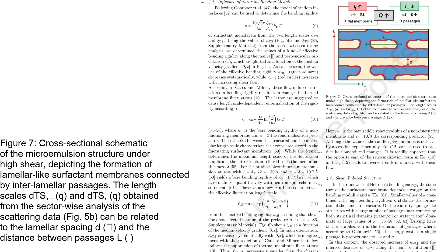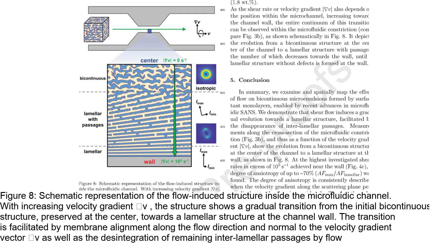A cross-sectional schematic of the microemulsion structure under high shear depicts the formation of lamellar-like surfactant membranes connected by interlamellar passages. The length scales obtained from the scattering data can be related to the lamellar spacing and the distance between passages, indicating the transition from a bicontinuous structure to a lamellar structure. A schematic of the flow-induced structure inside the microfluidic channel illustrates the evolution from the initial bicontinuous structure at the center towards a lamellar structure at the channel wall, facilitated by membrane alignment and the disappearance of interlamellar passages.